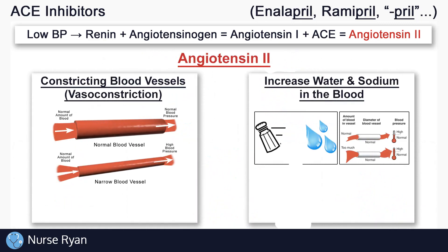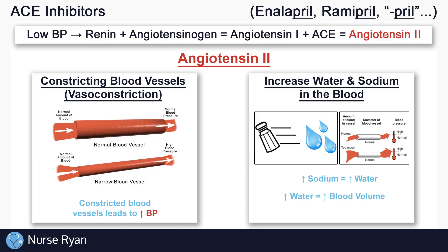The main ways that angiotensin 2 raises blood pressure are by constricting blood vessels and increasing the amount of sodium and water in the blood. The more constricted or narrow the blood vessels are, the higher the blood pressure. The more sodium in the blood, the more water in the blood — because water follows salt — and the more water in the blood, the higher the blood volume, which leads to higher blood pressure.